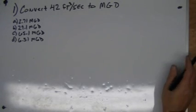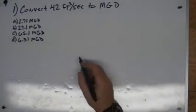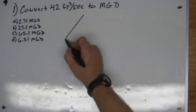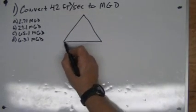We need to convert 42 cubic feet per second to MGD. There's a simple conversion, and we're going to use the triangle method.